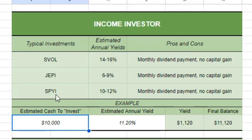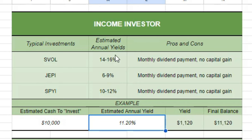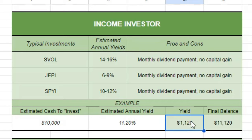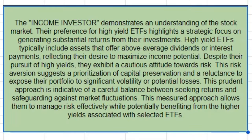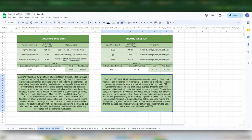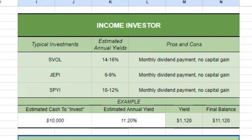As a quick example: if you had $10,000 and your yield was anywhere from 6% to 16% — say 11.2% — you would yield over the course of 12 months about $1,120. Feel free to pause the video and read the definition of what an income investor is. Now I want to jump over to the stock websites for these three different ETFs.